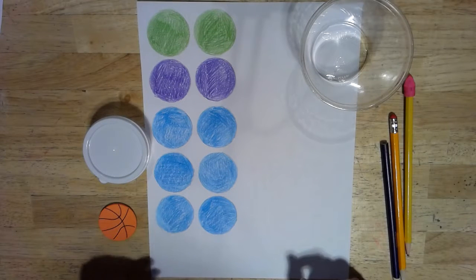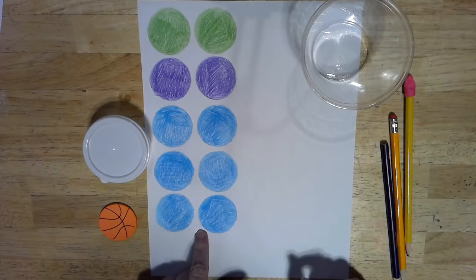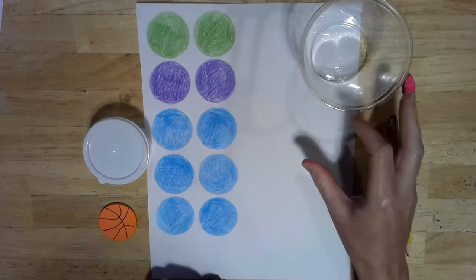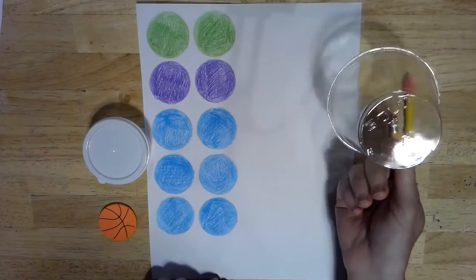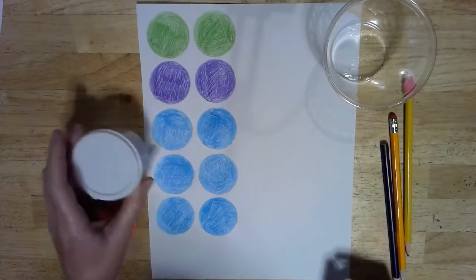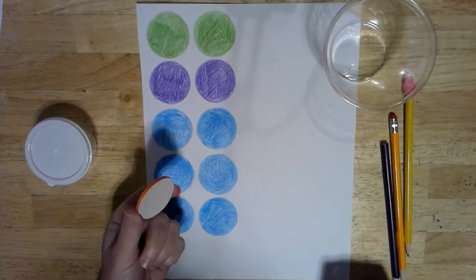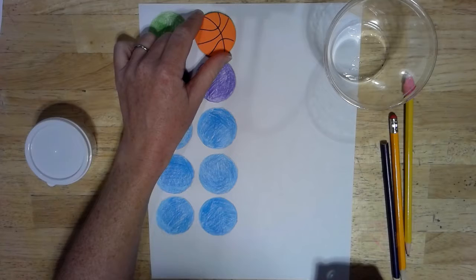But to start off, what we're going to need is ten circles. Now, you can use anything around the house that has a circular bottom, like a cup, a tiny little Tupperware, and in my case, I found a foamy that is the perfect size that I wanted.